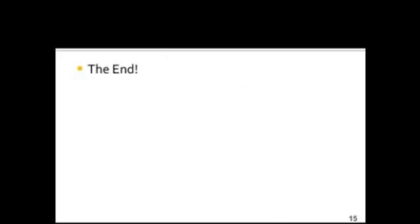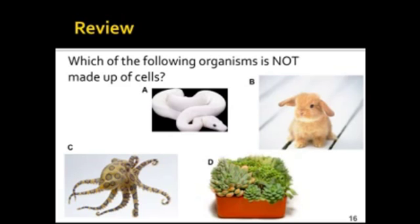So that's basically the lesson that I have for you today on cells. But wait, let's do a quick review before you go to make sure you understand some of the core concepts. So which of the following organisms pictured below is not made up of cells? A, an albino snake, kind of creepy looking. B, the most adorable bunny I could find on the internet. C, a blue ringed octopus. Or D, these pretty succulent desert plants.